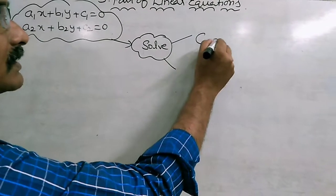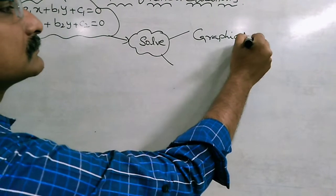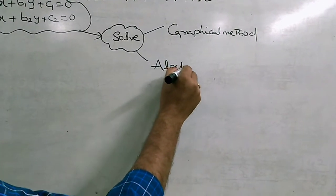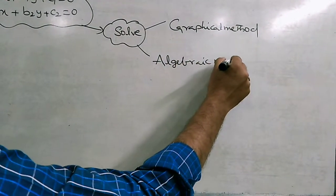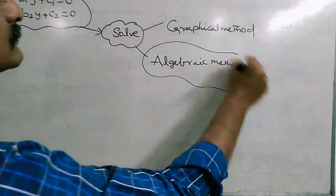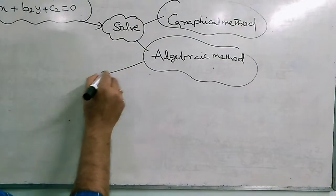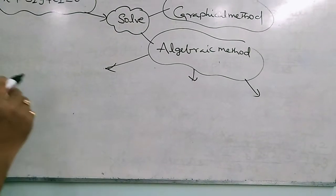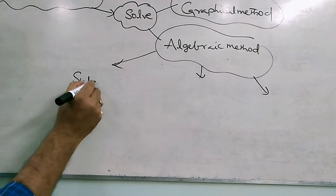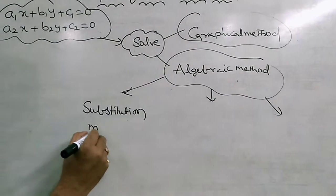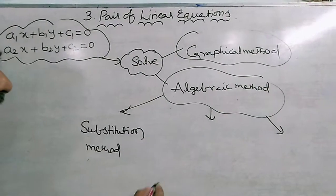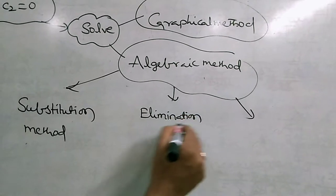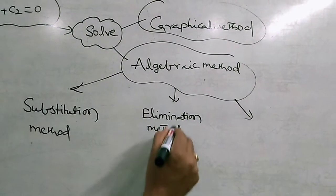The first method is the graphical method, and the second one is the algebraic method. In the algebraic method, we have three types to solve the pair of linear equations: the first one is the substitution method, the second one is the elimination method, and the third one is the cross-multiplication method.